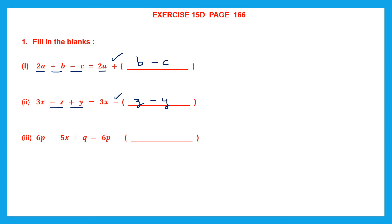Question 3. 6p minus 5x plus q on the left hand side. On the right, 6p has been taken. That means I need to put minus 5x and plus q inside the brackets. The sign before the bracket is minus, so the signs of these terms will change. Minus 5x will become plus 5x, or simply 5x. Plus q will become minus q.